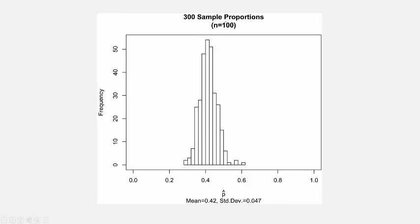Now watch when we do it for sample size 100 — look at this nice smooth bell curve. The mean is the same as P, equal to the population proportion, and the standard deviation got even smaller. This bell-shaped curve is what we call the sampling distribution of the sample proportion.